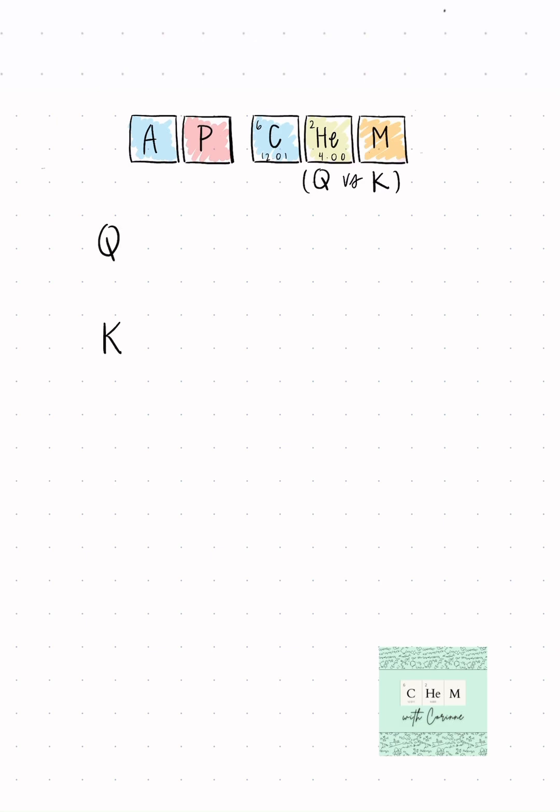So K is the equilibrium constant. You've been exposed to this for a while. You're looking at Kc, Kp, and Ksp, or the equilibrium constant in respect to concentration, pressure of gases, or the solubility product.